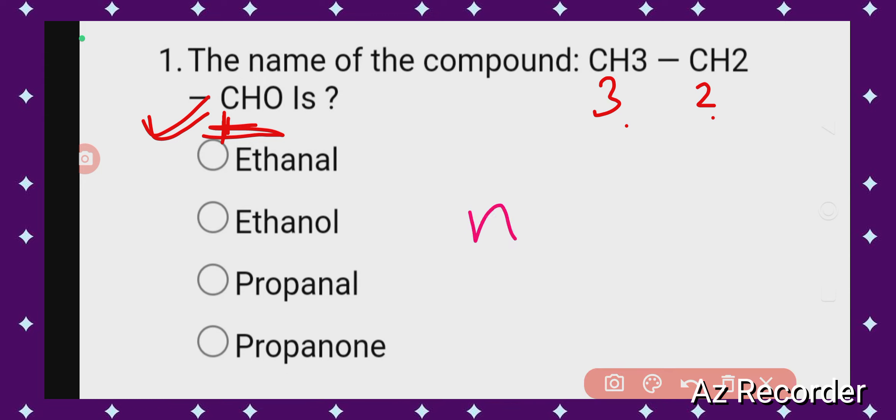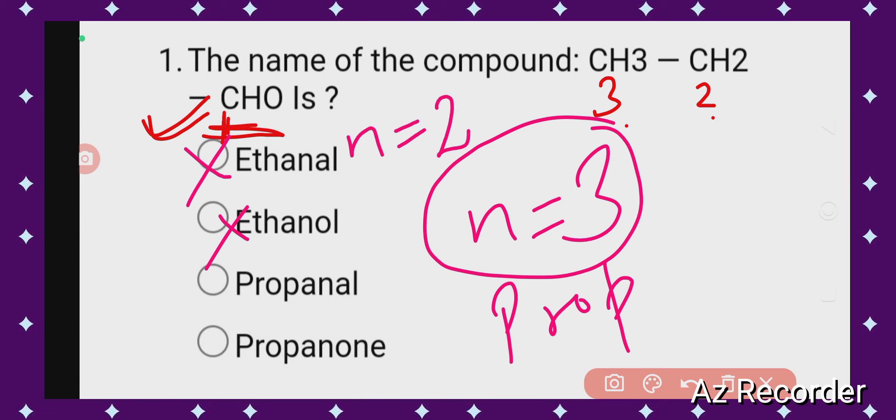Now you know if we have three carbon atoms, we use the name 'prop'. So you can easily eliminate options A and B because 'ethane' is used when we have two carbons. Since there are three carbon atoms, we will use 'prop' as the starting of our name.